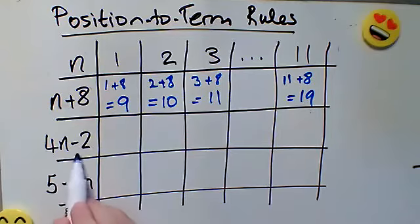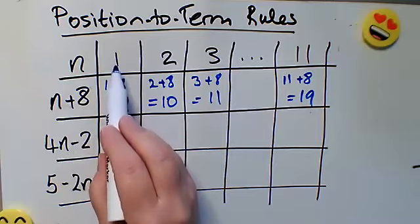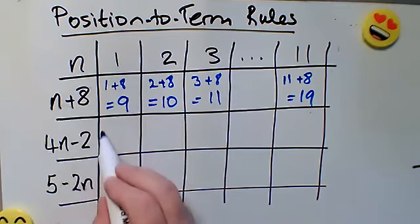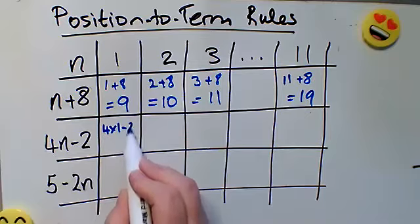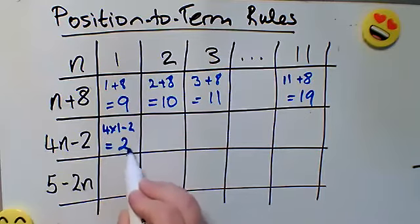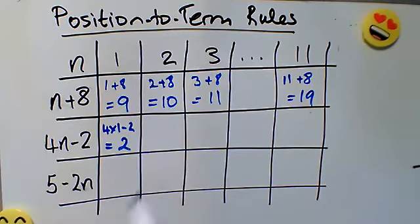The second sequence, 4n minus 2, we're going to do exactly the same thing. We're going to substitute in the position in the sequence in place of n. So 4 times 1 is 4, take away 2, gives me a first term of 2 in that sequence.